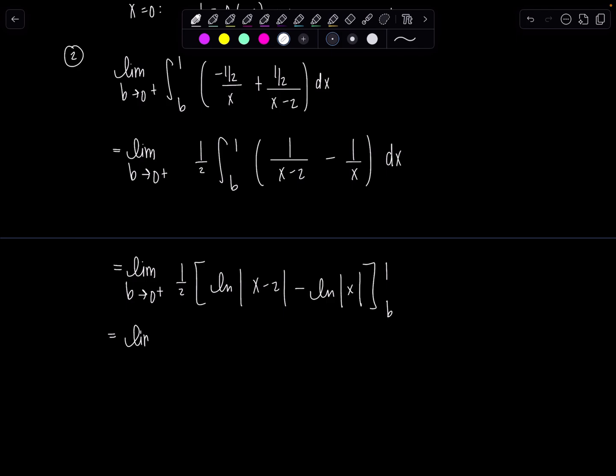So here we go. Limit b approaches zero from the right, one half times this will be ln absolute value one minus two minus ln absolute value of one minus ln absolute value b minus two plus, I'm just distributing that negative all at once, ln absolute value of b.